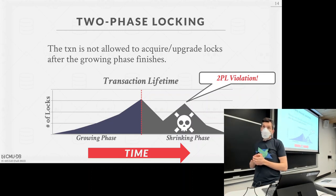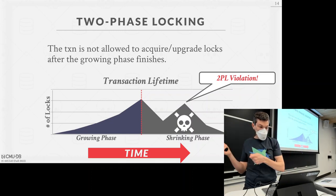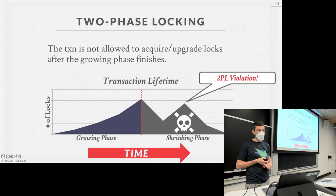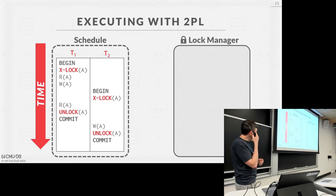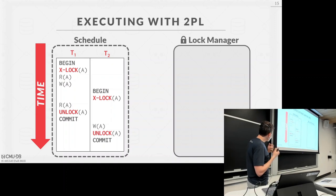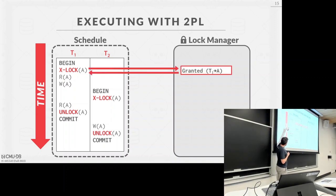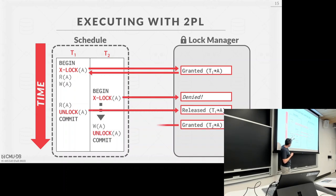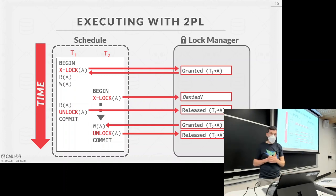What if two transactions are both in the growing phase and need locks held by the other? That's a deadlock — we'll handle that later. Going back to the example with two-phase locking: T1 gets the exclusive lock on A, does read and write. T2 tries to get the exclusive lock on A but is denied because T1 holds it. T1 does the read on A, unlocks, and the lock gets released to T2. T2 does the write, unlocks, and commits.